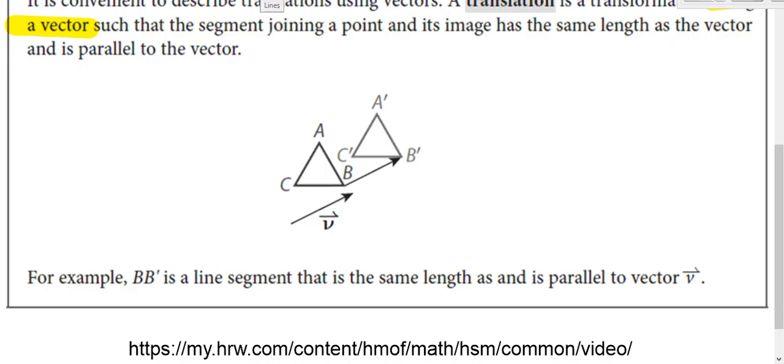If you copy that vector, we're going to move point B that distance, we're going to move A that same direction and distance, and C moves that same direction and distance. Every vertex moves the same direction and the same distance.